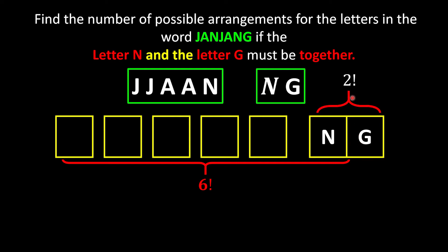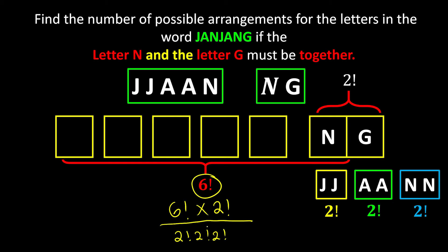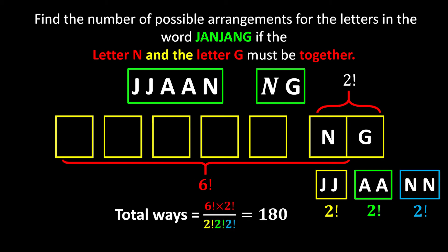Don't forget that NG inside the box can rearrange themselves in 2! ways — they can be NG or GN, but they must stay together. We also have identical letters, so we are double-counting. We have three pairs of identical letters, so we divide by 2! three times — once for J, once for A, and once for N. All together: 6! ways to arrange the 6 objects, times 2! for NG, divided by (2! × 2! × 2!) for the identical letters, giving 180 different arrangements.